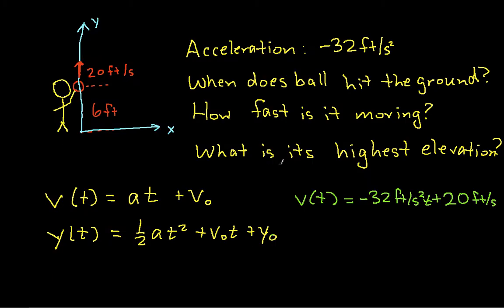The position as a function of time will also be, it's easy to obtain by just plugging stuff in, one-half at squared will be minus 16 feet per second squared times t squared, plus 20 feet per second times t, plus our initial position, which is 6 feet.